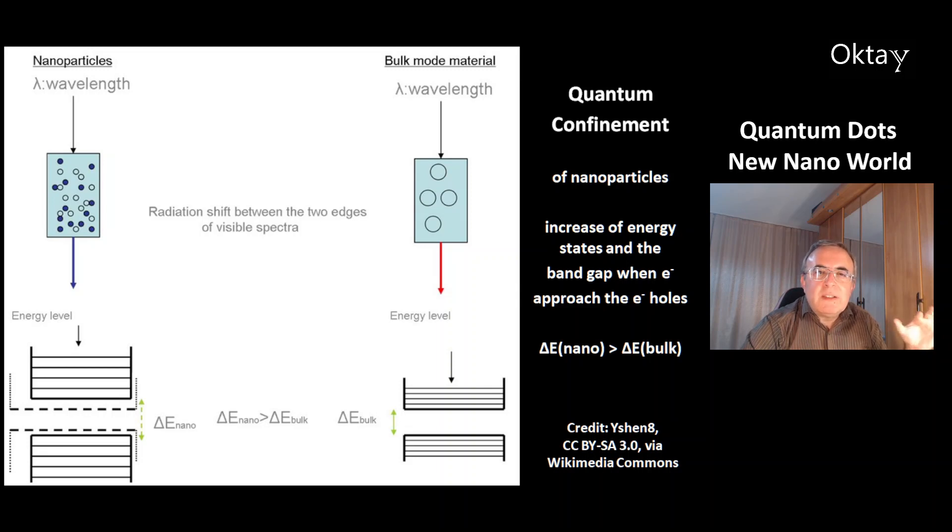And when the electrons approach the electron holes, that's why these energy levels are stretched. And the bandgap of ΔE nano is much bigger than the bandgap of the bulk mode material.